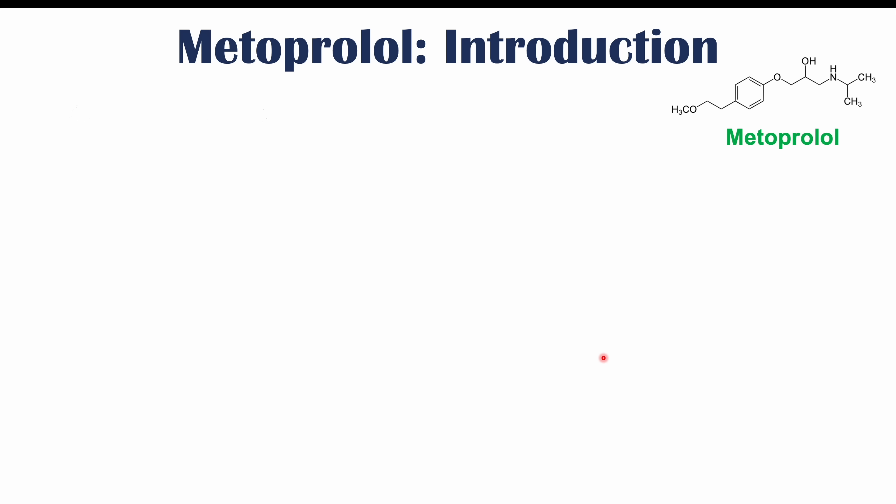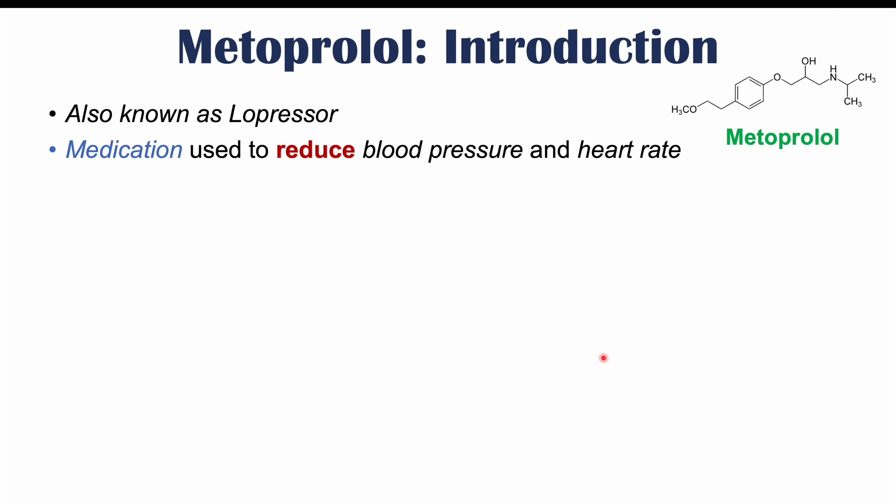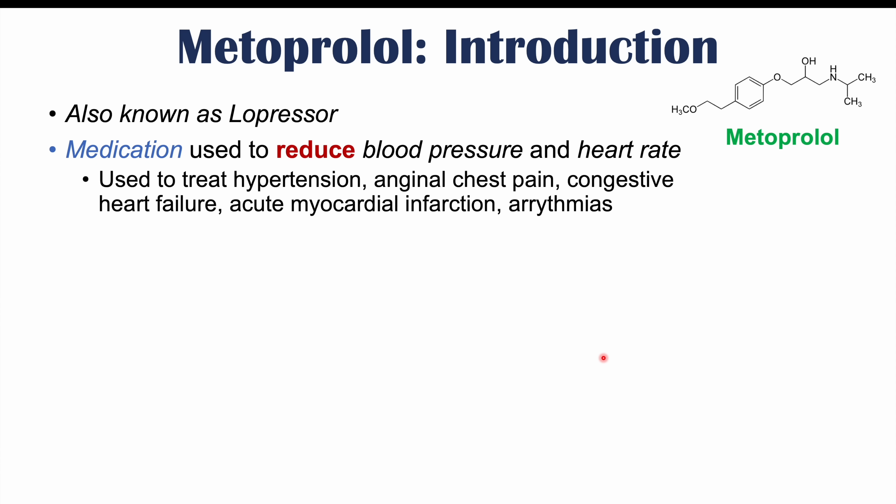Metoprolol is also known as Lopressor. It is a medication used to reduce blood pressure and heart rate, and it's used to treat hypertension, anginal chest pain, congestive heart failure, acute myocardial infarctions, and arrhythmias like atrial fibrillation.